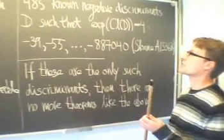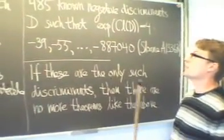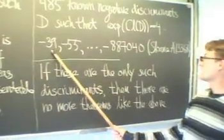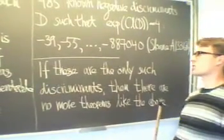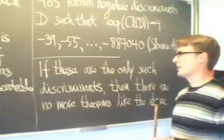Now, there is a known list of 485 such discriminants, and it seems very reasonable to conjecture that this list is complete.